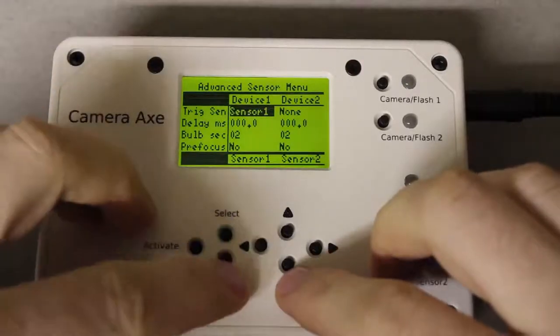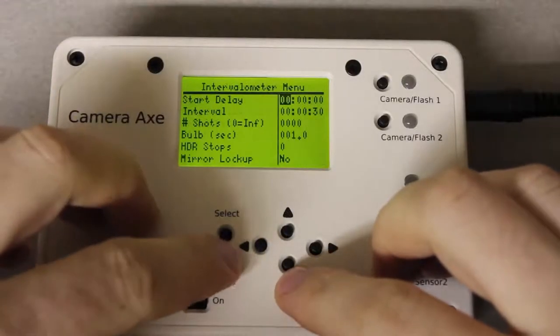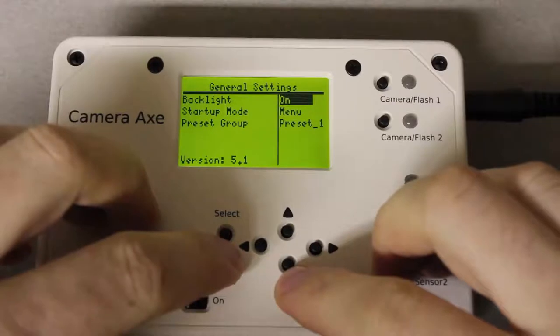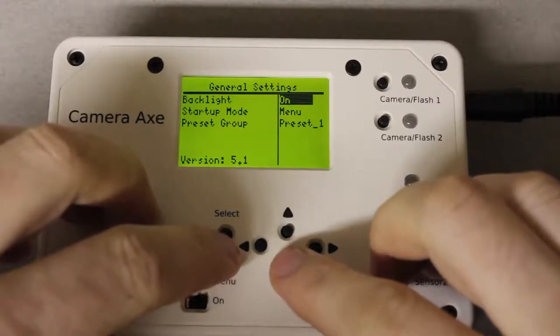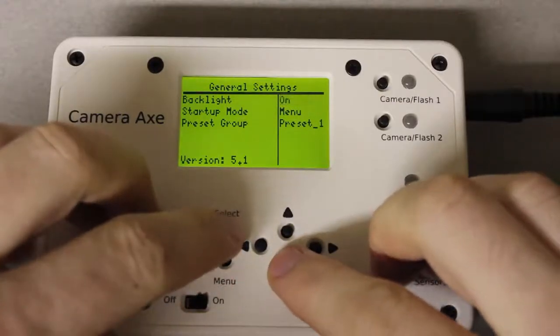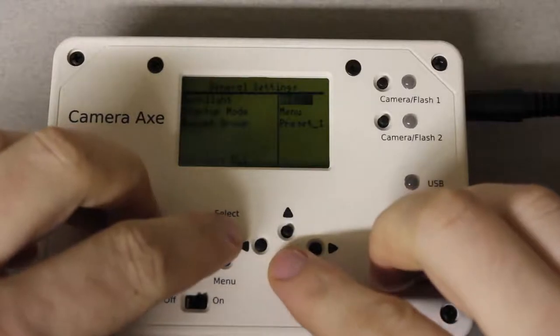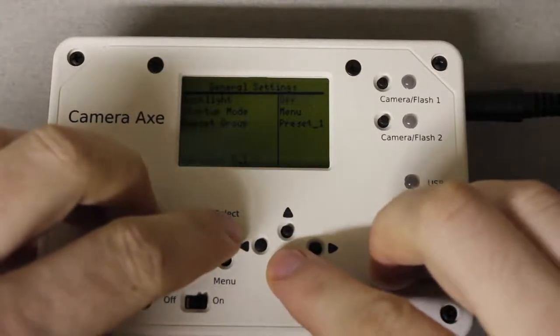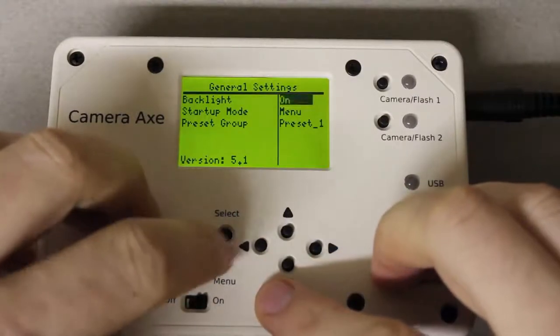Now one thing you may want to do is go through the menus until you get to the general settings menu and here you can turn the backlight off and that will conserve a lot of power. I'll leave it on since it shows up better in the video this way.